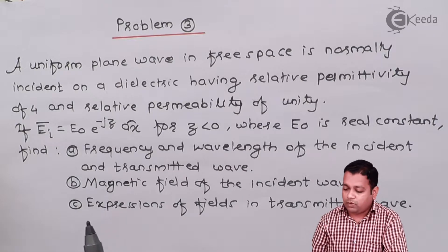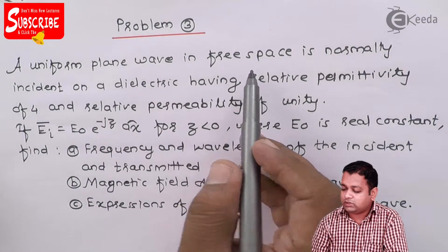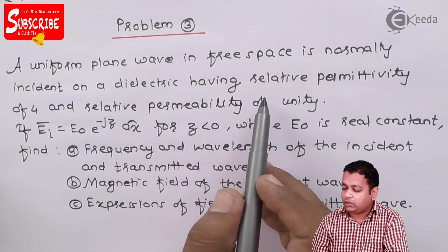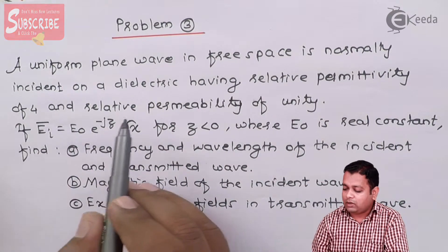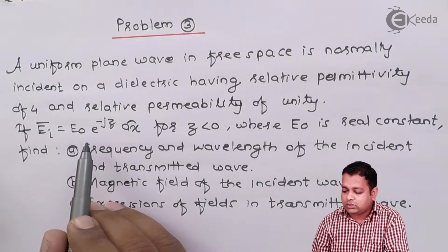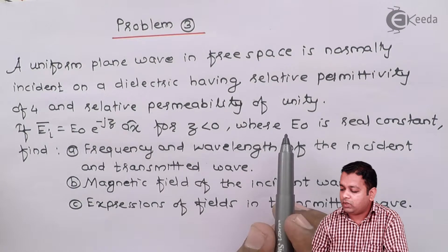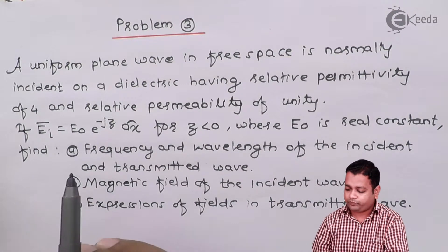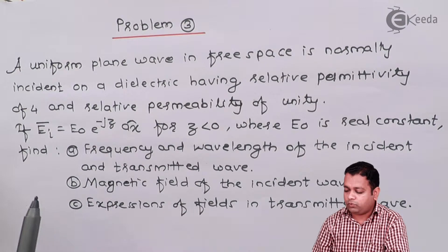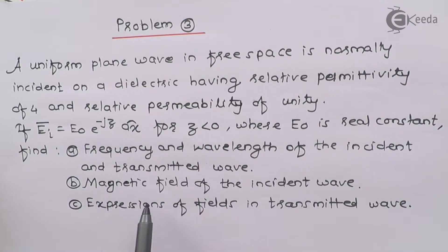So we have here the problem statement. A uniform plane wave in free space is normally incident on a dielectric having relative permittivity of 4 and relative permeability of unity. If EI bar is equal to E0 times e to the power minus jz·ax̂ cap, for Z less than or equal to 0, where E0 is a real constant. We have to determine three parts: frequency and wavelength of the incident and transmitted wave; the magnetic field of the incident wave; and the expression for the transmitted wave.